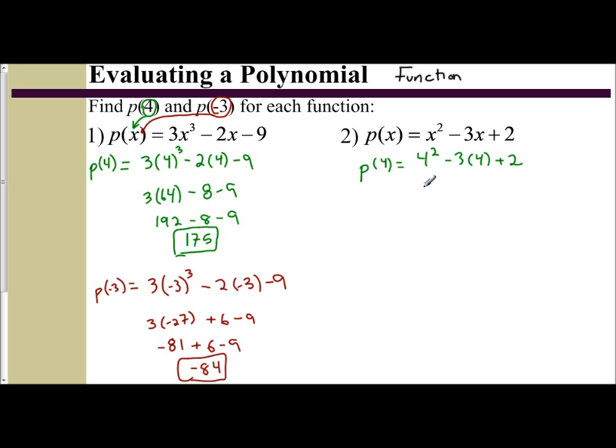So I have 4² minus 3 times 4 plus 2. 4² is 16, minus 3 times 4, minus 12, plus 2. 16 minus 12 is 4, plus 2 is 6. And so now I know the value of the function at P(4).